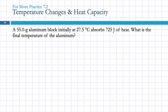Let's do another example. A 55 gram aluminum block initially at 27.5 degrees Celsius absorbs 725 joules of heat. What is the final temperature of the aluminum? Well, let's highlight those numbers. We've got 55 grams. We've got this temperature. We've got that joules. And it's asking us what the final temperature is. So, I've got 55.0 grams. We've got 27.5 degrees Celsius and 725 joules. We've got something changing temperatures. We're talking about heat. We're going to use that Q equals MC delta T equation.